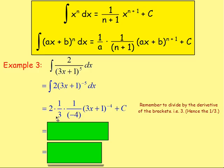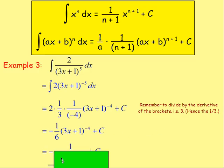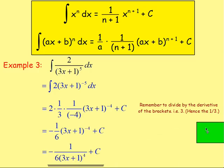From there, simplify: treating 2 as 2 over 1, you have 2 times 1 times 1 on top (giving 2), and 1 times 3 times 4 on the bottom (giving 12). Taking the negative to the front gives negative 2 over 12, which simplifies to negative 1 sixth. So the answer is negative 1 sixth times (3x plus 1) to the power of negative 4, plus c. If asked to write that with a positive index, it becomes negative 1 over 6 times (3x plus 1) to the power of 4.